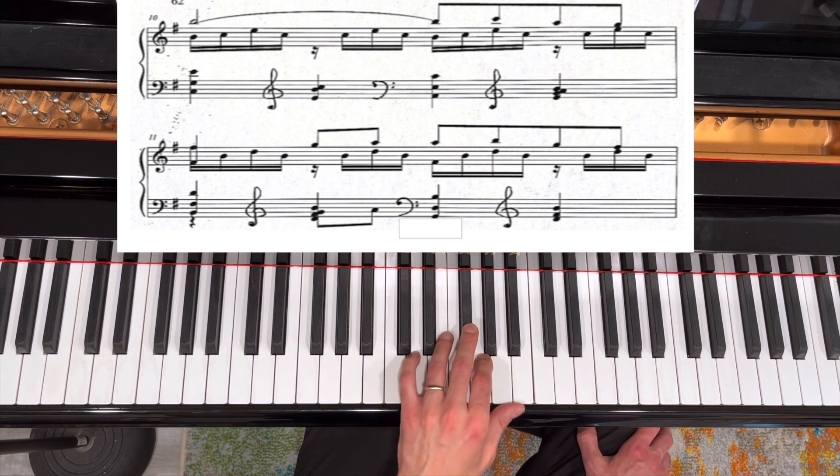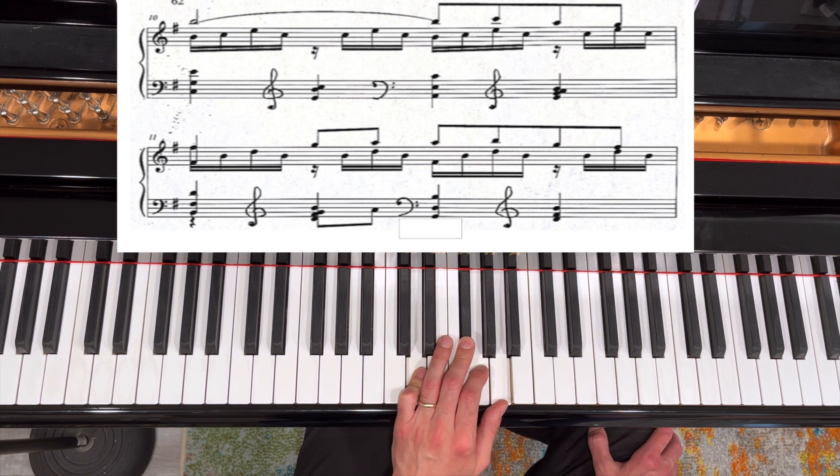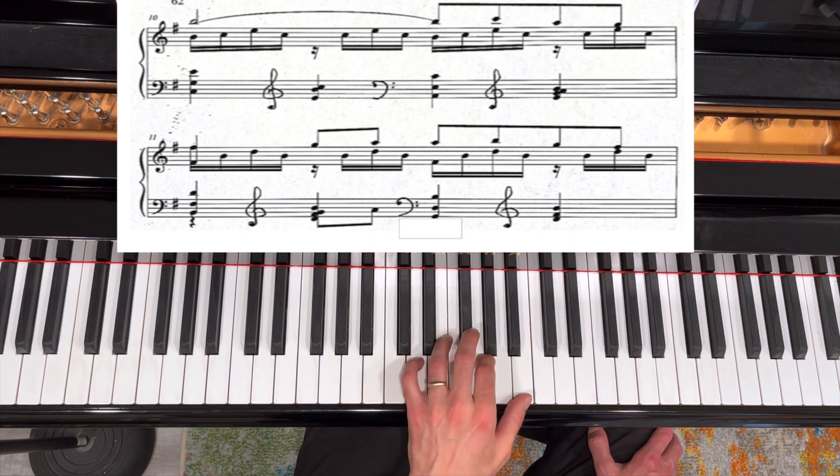And you probably noticed in measure 63, after the second chord, I added another note in the left hand. That A, that comes from the right hand, lower A, and that helps me control the melody line better in my right hand.